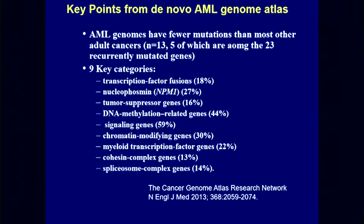The genome of AML patients is not really as complicated as the genome in terms of mutations that we see in solid tumors. There are about 23 recurrently mutated genes — genes that are mutated in more than 5% of AML cases. The average number of mutations in AML cases is about five. Several of these might be driver mutations. The Cancer Genome Atlas paper published three years ago in the New England Journal of Medicine broke down the 23 recurrently mutated genes into nine categories, each of which could be thought of as a target for drug development.